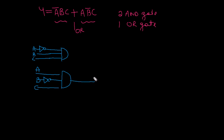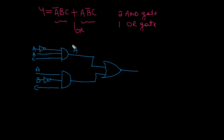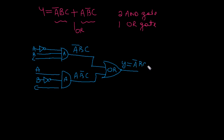The output of the first AND gate and the output of the second AND gate are both connected to one OR gate. The output of the first AND gate is A-bar BC, and the output of the second AND gate is A B-bar C. Therefore, the final output y is equal to A-bar BC plus A B-bar C.